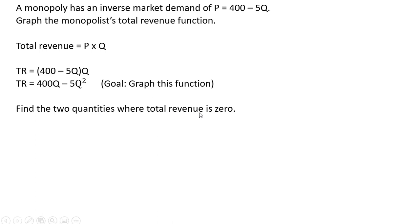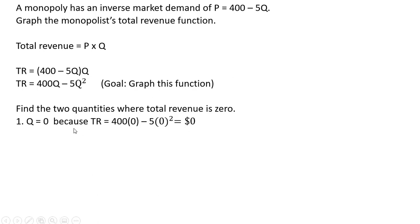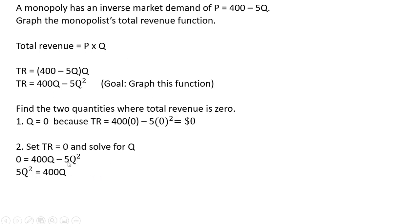We're going to find the two quantities where total revenue is zero. When Q equals zero, plugging zero into this equation, total revenue is zero — it will always be zero at zero units of output. For the second quantity where total revenue equals zero, we take our total revenue function and set the left-hand side equal to zero. Adding 5Q squared to both sides, dividing through by Q, we lose a Q on the right-hand side, and dividing through by 5, Q equals 80.